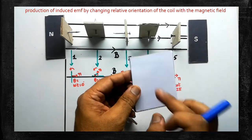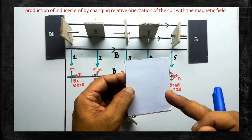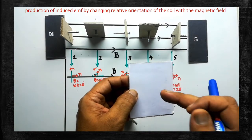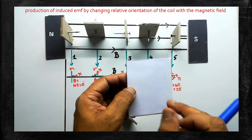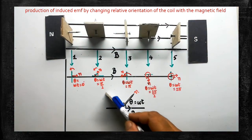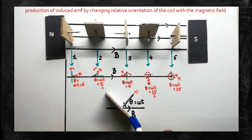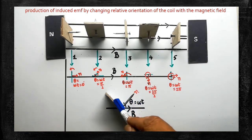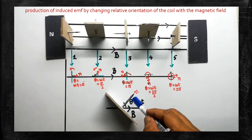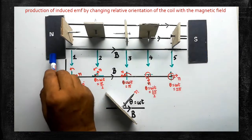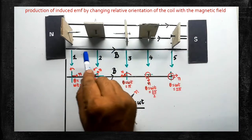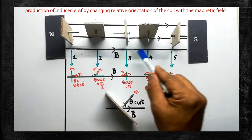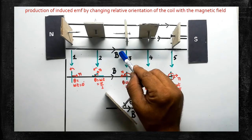By changing the position or orientation of the coil within the magnetic field, EMF can be induced. We are going to derive various steps and demonstrate how the EMF is induced at various positions. Assume that this is the plane of the coil — one rectangular coil is placed here. This nail shows the normal which is drawn to the plane of the coil. Normal is a perpendicular line drawn to the surface.